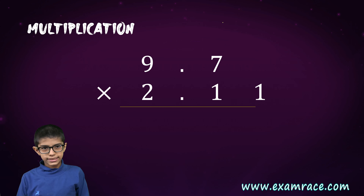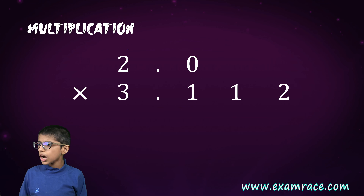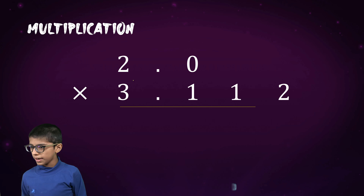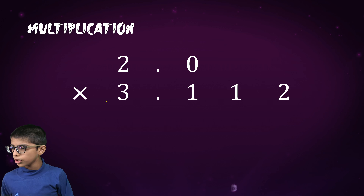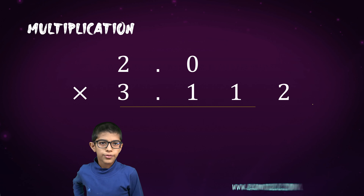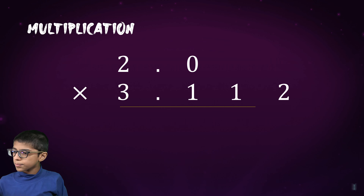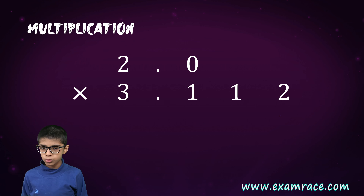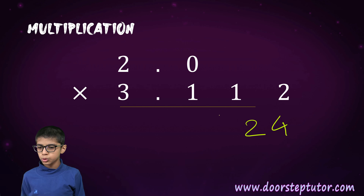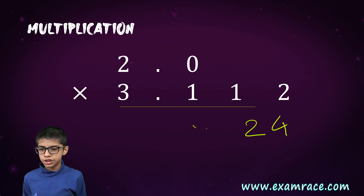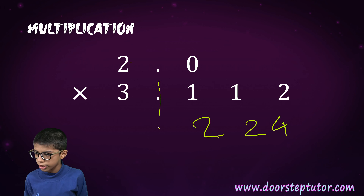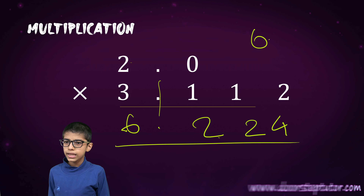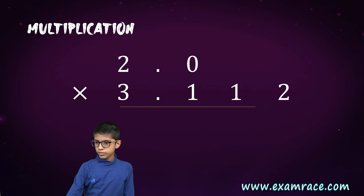By that method also we can get the answer. Now here is a simpler multiplication question: 2.0 multiplied by 3.112. What we do is just multiply 3.112 by 2. So: 2 times 2 is 4, 2 times 1 is 2, 1 times 2 is 2, we bring the decimal point down, then 2 times 3 is 6. Therefore our answer is 6.224.